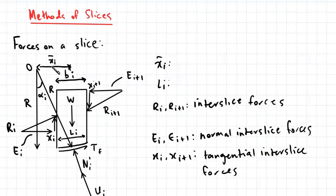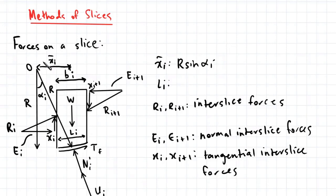This distance here corresponds to the distance from the center of the slip circle to the center of the slice, and that's found by R sine alpha, which is this angle here. And L just corresponds to the arc length of the slice base.